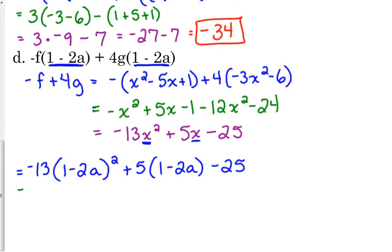Now, this is what I was just talking about a second ago. 1 minus 2a squared is not 1 minus 4a squared. And, I'm going to write it out this time so that you know 1 minus 2a squared. I've got to do 1 minus 2a times 1 minus 2a. That's what it means to square something. You multiply it by itself. I'm going to go ahead and distribute 5 to the 1 minus 2a, and then we've got minus 25 there on the end.